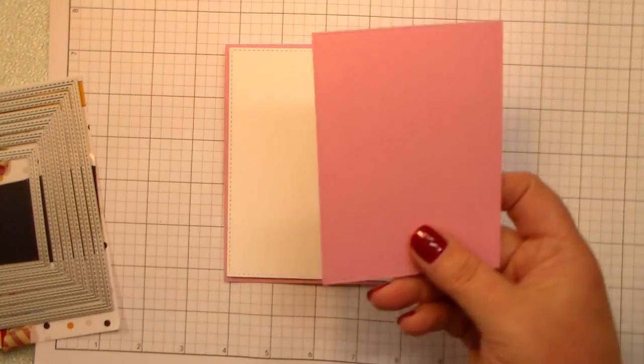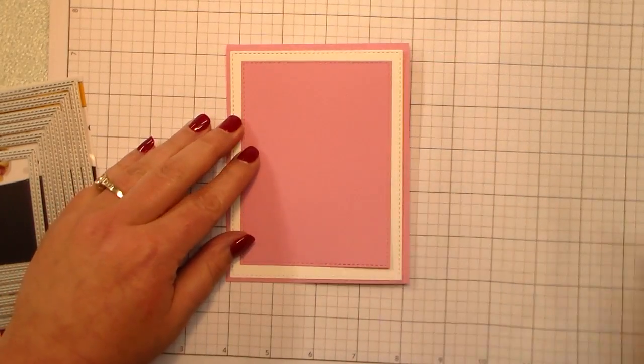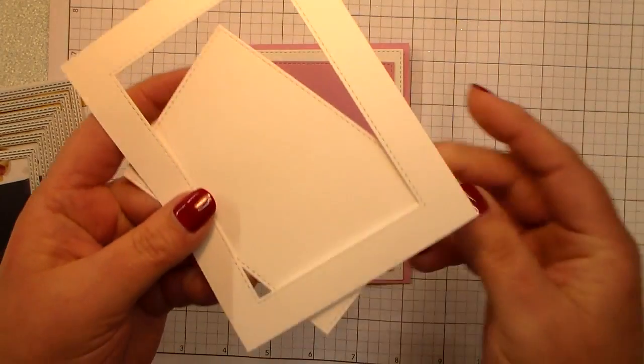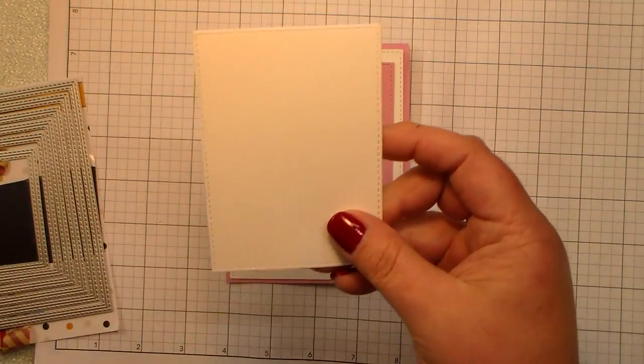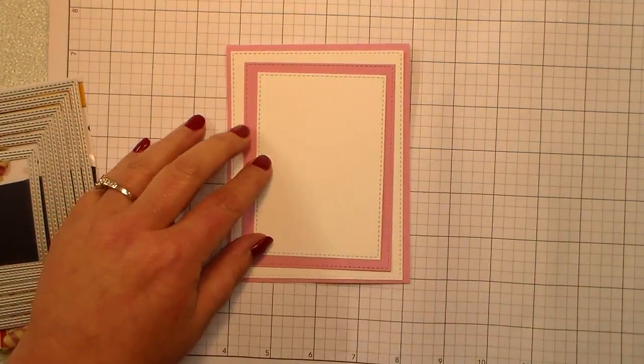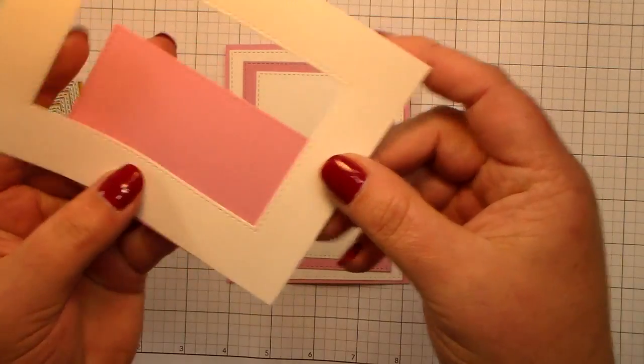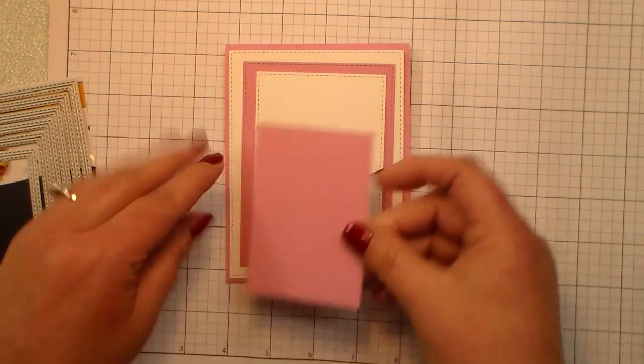This is the next size down, the frame, and then the center. And each center is about a quarter of an inch step down from one another. It makes layering so easy.